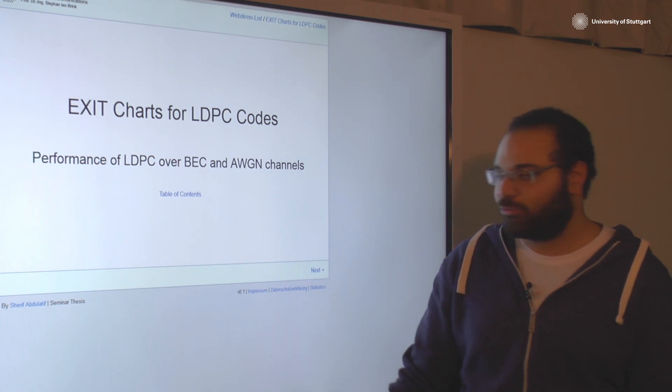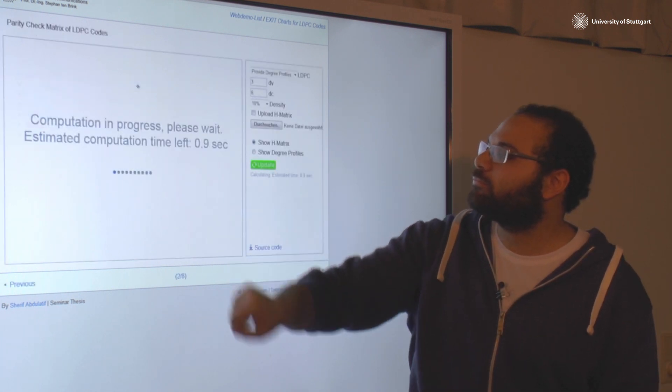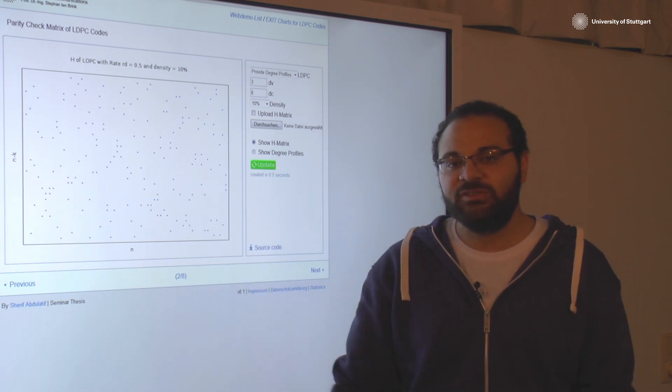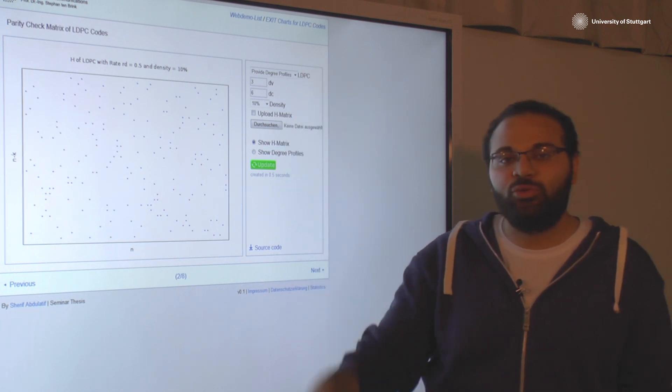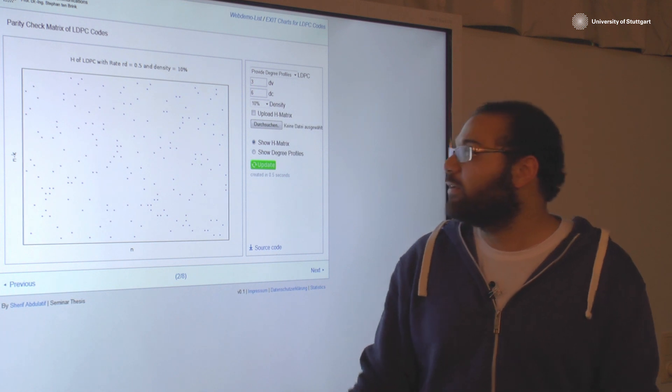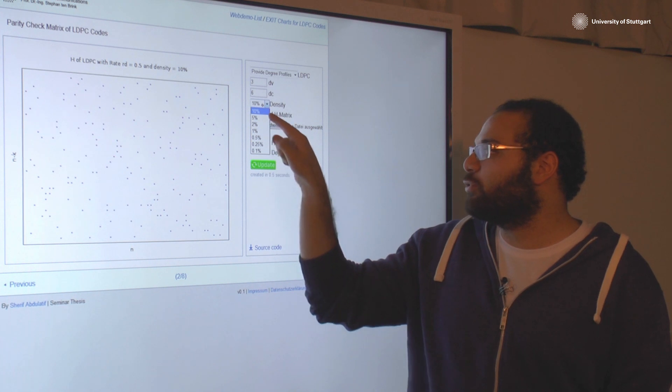Here we can visualize the parity check matrix of different LDPC codes. You have plenty of options here. You can provide your own degree profiles for the variable node degree and the check node degree and you can change it here from this text box. You can also change the list of the code.